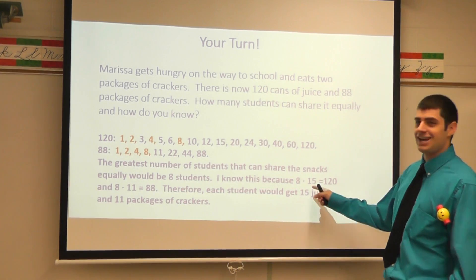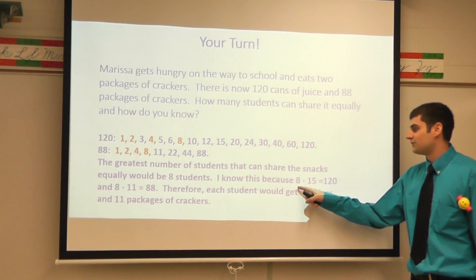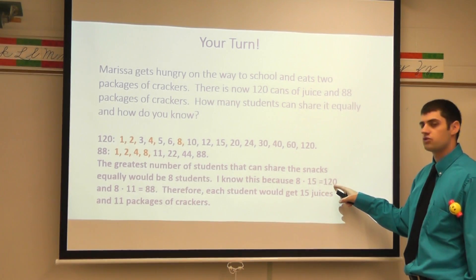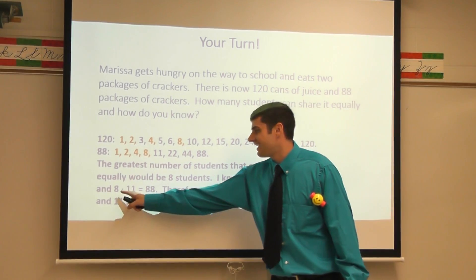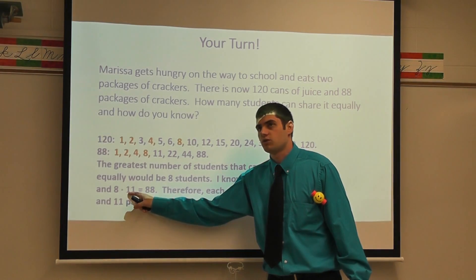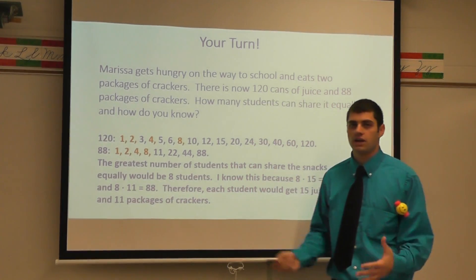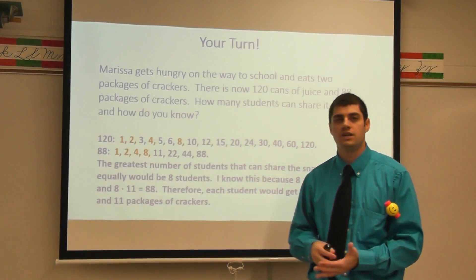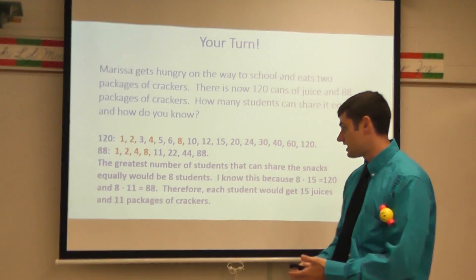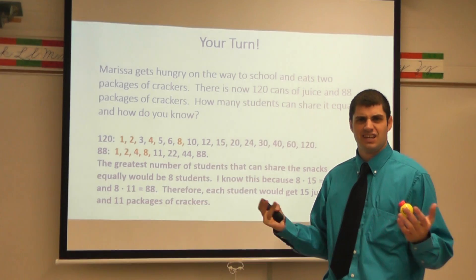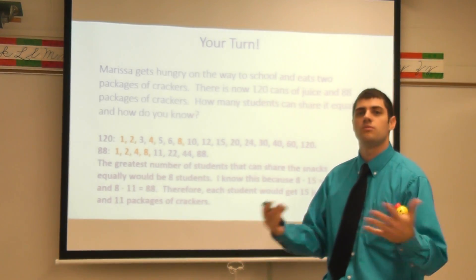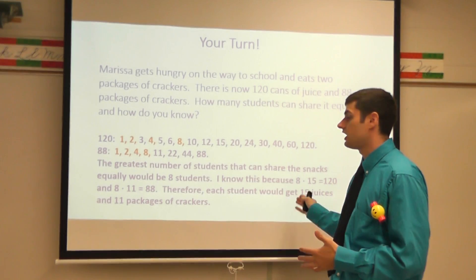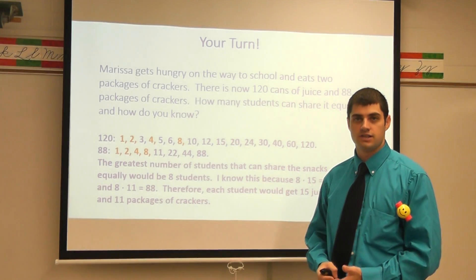When looking at our number sentences: 8 students times 15 juices gives me 120 juices, and 8 students times 11 crackers gives me 88 crackers. Just make sure when writing your number sentences that you're labeling what these numbers mean. If you turn it in and I see '8 times 11 equals 88,' I'm going to ask you — what do you mean? Tell me more. You have to be very specific when talking about number sentences.